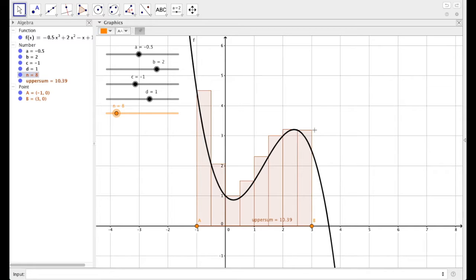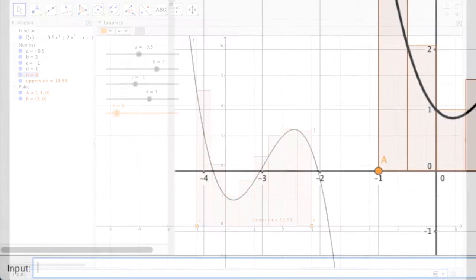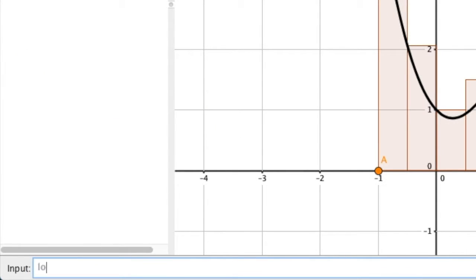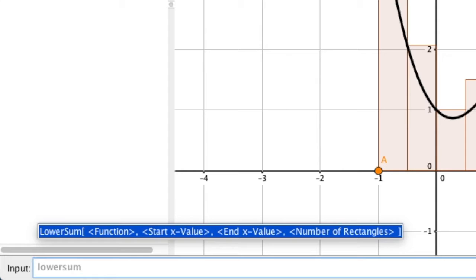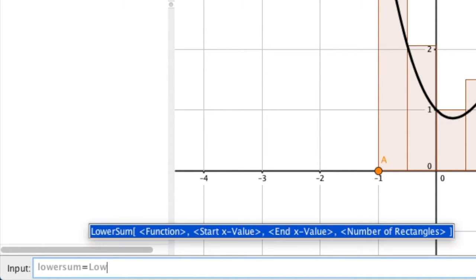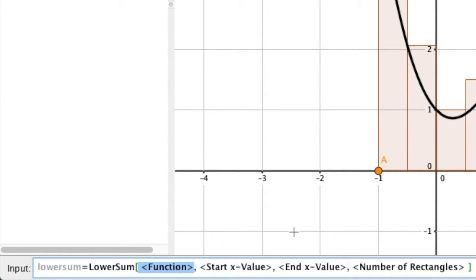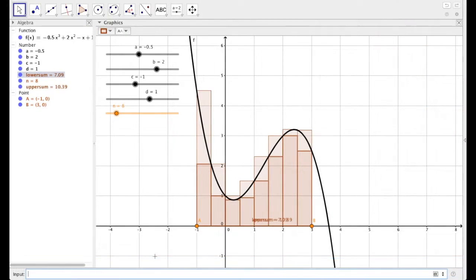So if we have an upper sum, there's also a lower sum. So let's do the same thing. So down in the input bar, let's type in lower sum, all lowercase letters, equals, and now let's do capital L, lower sum, select the function. And this time we have function f, start value x of a, end value x of b, number of rectangles n.